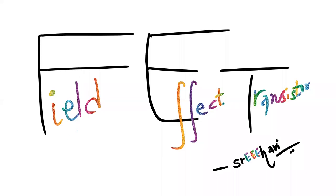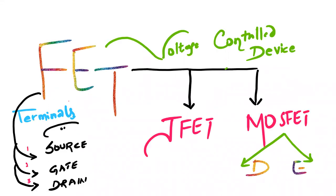Today I would like to discuss one more new concept: FET, which stands for Field Effect Transistor. FET is a voltage-controlled device having three terminals: source, gate, and drain. FETs can be characterized into two types: JFET and MOSFET. Within MOSFET, we have depletion MOSFET and enhancement MOSFET.